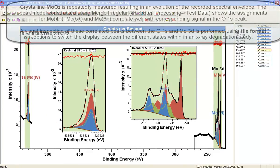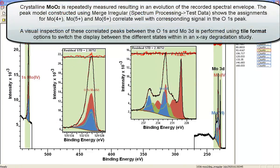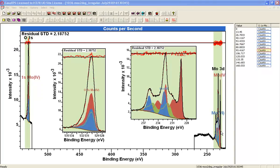These VAMAS blocks have been created by merging using the irregular option, two spectra: one measured at oxygen 1S and the other at molybdenum 3D energies. In order to see these clearly, I've created two insert tiles. The idea is that I can display the oxygen peak here with a bit more detail, and similarly the molybdenum 3D is the same as this one you see here.